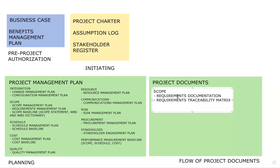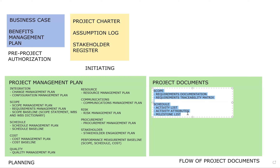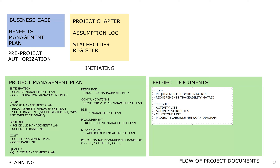Going into schedule, there are things such as an activity list, activity attributes, and the milestone list. The activity list is just a list of activities; the activity attributes further define the characteristics of those activities. The milestone list is a list of key events and accomplishments we're seeking. We also have a project schedule network diagram from sequencing the activities, plus duration estimates and basis of estimates — BOEs — from estimating the durations.